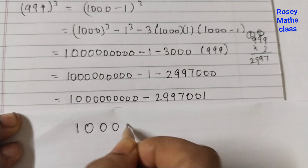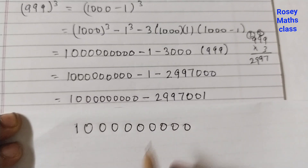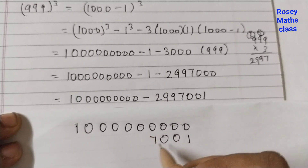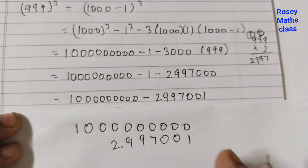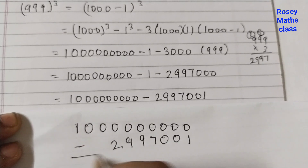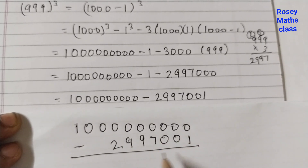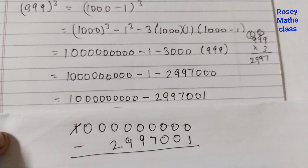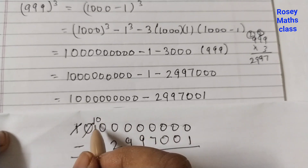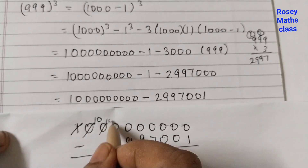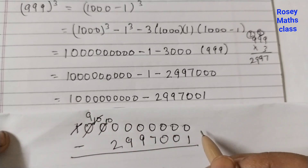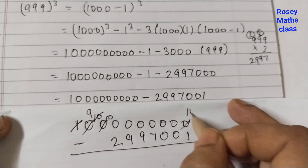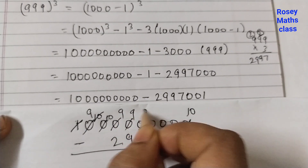We have 1,000,000,000 minus 2,997,001. Always start writing from the right-hand side so you won't go wrong. Since 0 is smaller than all these digits, we need to borrow. When you borrow from 1, it becomes 0 and the next position becomes 10. You borrow from 10, making it 9. When you have zeros at the end, the last 0 becomes 10 and the rest all become 9.